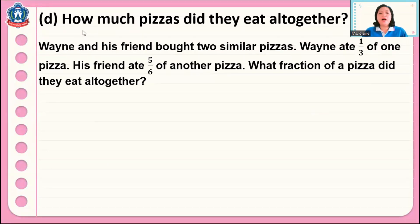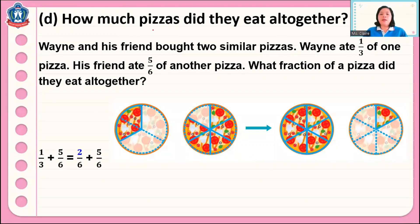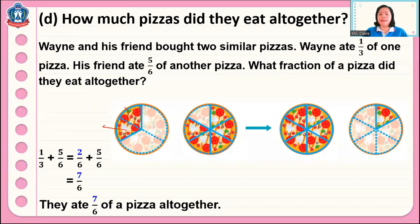Here is another problem. Wayne and his friend both have two similar pizzas. Wayne ate one third of one pizza. His friend ate five sixths of another pizza. What fraction of a pizza did they eat altogether? We add one third plus five sixths. One third is equal to two sixths. So two sixths plus five sixths equals seven sixths. This is an improper fraction, which we can change to a mixed number: one and one sixth. So both of them ate one and one sixth, or seven sixths, of pizza altogether.